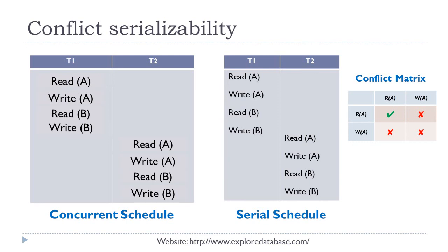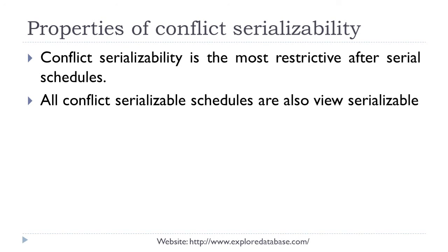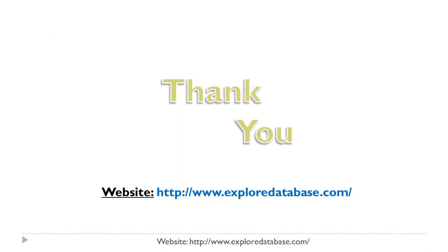A few properties of conflict serializability: conflict serializability is the most restrictive after the serial schedule. In a serial schedule, all transactions must execute one after the other, whereas in conflict serializability we allow concurrent schedules as long as they are serializable. The second property is that all conflict serializable schedules are also view serializable. In the hierarchy, view serializable is the more generalized version, conflict serializable is more strict, and serial schedules are the most strict. View serializability is another concept of serializability. We have discussed various serializability concepts along with the idea behind conflict serializability. Thank you.